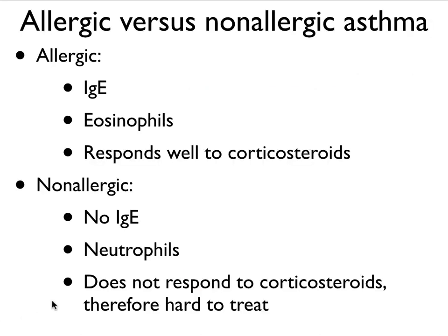The difference between allergic and non-allergic asthma: allergic asthma is characterized by IgE and the presence of eosinophils in the lung, and it generally responds well to corticosteroids — the main therapy in asthma. Non-allergic asthma is not characterized by IgE; it's characterized by neutrophils coming into the lungs, and it generally does not respond very well to corticosteroids, making it harder to treat.